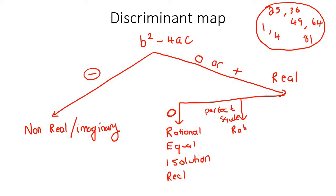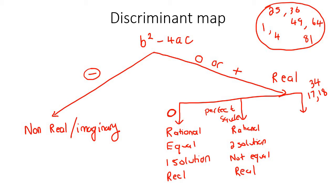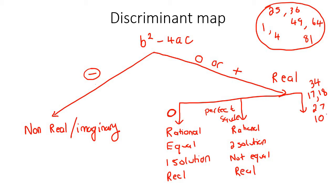If your discriminant is a perfect square, then your answers are rational, there will be two solutions, they won't be equal, but they are real. And then the other category is any other positive number that's not a perfect square — like 17, 18, or 34. Then the answer will be irrational, there will be two solutions, they will not be equal, but they are real.